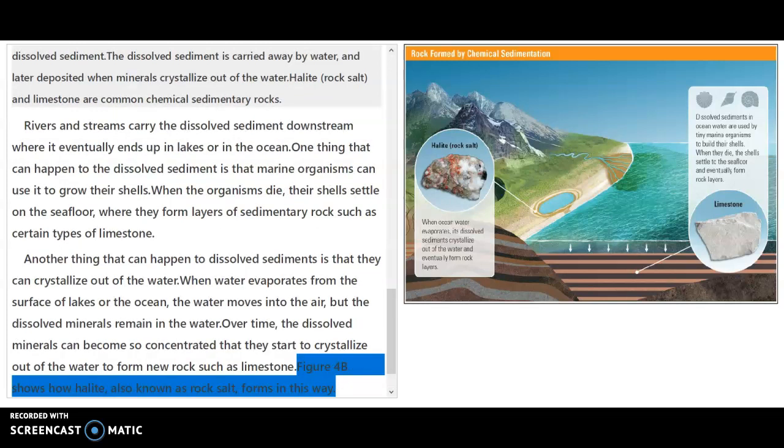So here it talks about figure 4b again. It shows how halite, also known as rock salt, forms as the minerals come together and crystallize and the water evaporates. And those are the two types of sedimentation and how different types of sedimentary rocks can form.